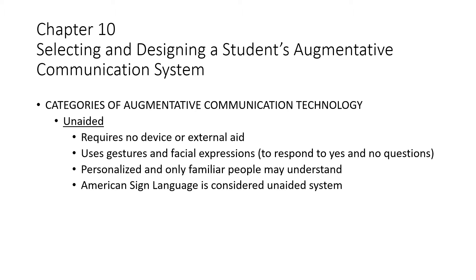Unaided communication uses gestures and facial expressions to respond to yes and no, like nodding yes and no or shaking your head back and forth. It's personalized and only familiar people may understand it — for example, if three fingers means something, you and that person would know, but someone outside that circle would not.